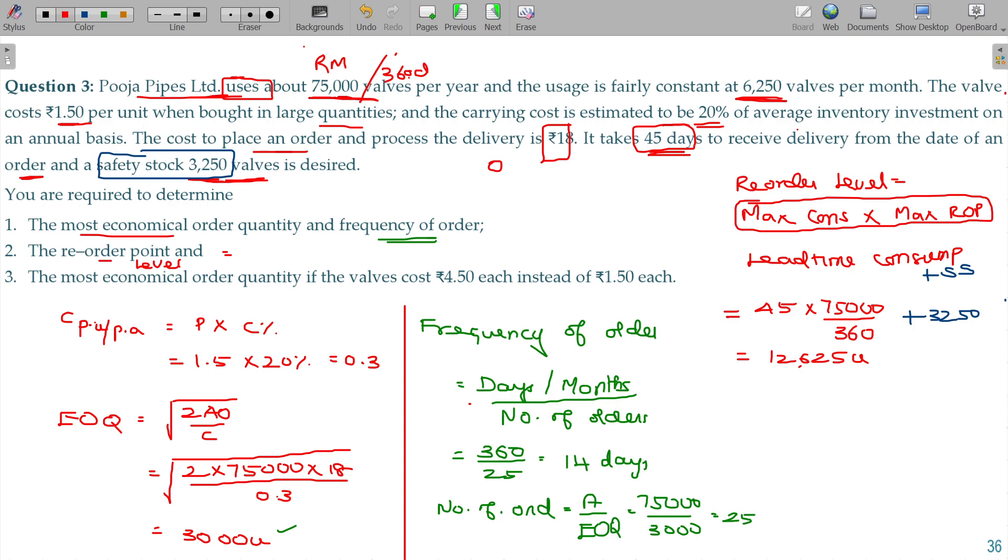Now the last question: what is the most economical order quantity if the valves cost 4.50 each instead of 1.50? So, the formula for EOQ is root of 2AO by C.